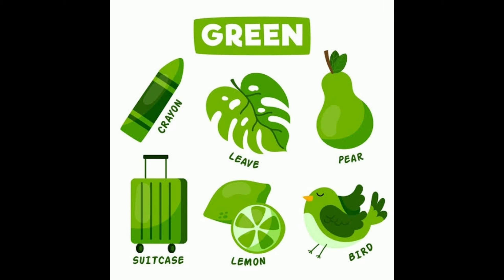I have six pictures here. All are green in color: the crayon, leaf, pear, suitcase, lemon, and the bird — all green in color. Have you seen this in your kitchen anytime?